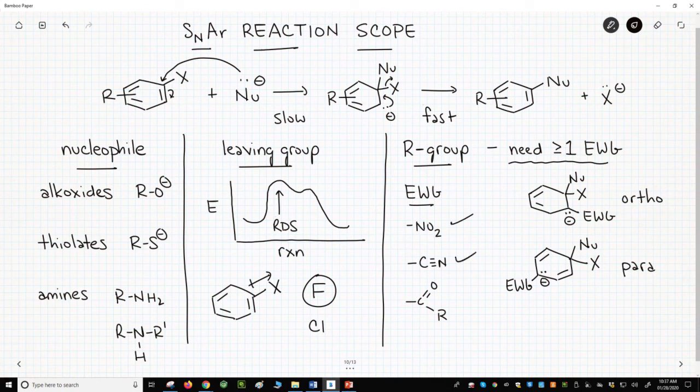Nitro, cyano, carbonyls of all sorts, among others. Just having an electron withdrawing group is not enough. The EWG-R group should be either ortho or para relative to the leaving group.